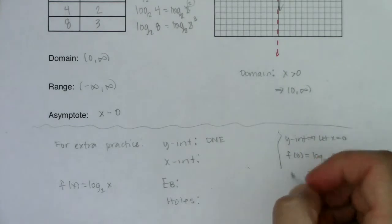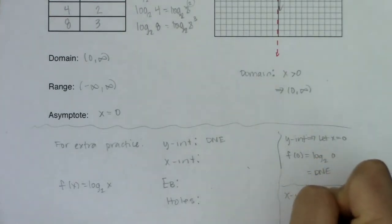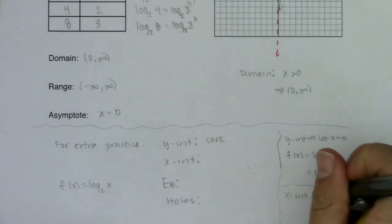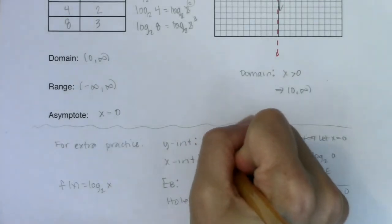Okay. Now for the x-intercept, if you ever want an x-intercept, you want to let y equal 0. Well, if I let y equal 0, that's me saying, well, when is log base 2 of x equal to 0? Well, that's like saying, when is 2 to the 0 equal to x, which is saying, when is x equal to 1? So my x-intercept is the ordered pair 1, 0.